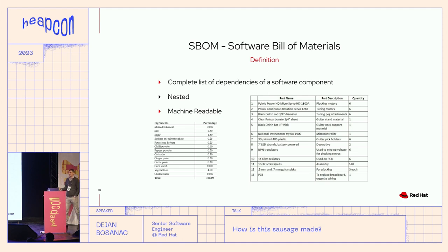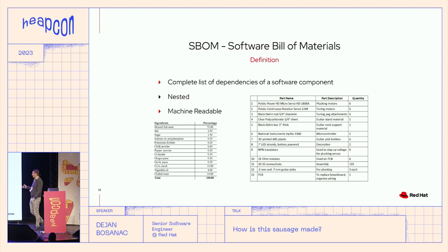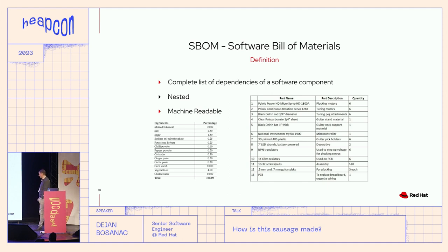Once we have Package URLs as a way to identify software components, we want to build what's called a Software Bill of Materials, or SBOM. A bill of materials is nothing new — the title of this talk plays on that concept. It's used in the food industry: most people check food ingredients to see what's inside before consuming it. Even in mechanical or other engineering, bills of materials have been around for a long time. So why wouldn't the software industry have something similar?